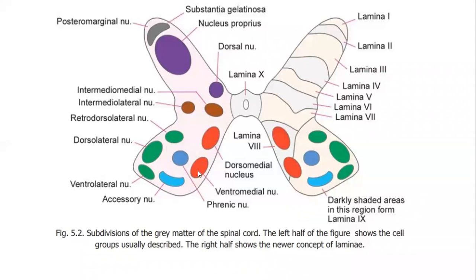In the lateral horn, when present, we have the intermediolateral and intermediomedial groups of nuclei. These two groups actually belong to one single group called the intermediate group.